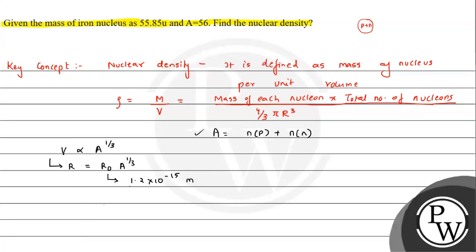We will generalize the formula. Rho can be written as mass of each nucleon. Protons and neutrons collectively are called nucleons. We know mass of protons equals mass of neutrons, and that is 1.67 times 10 raised to minus 27 kg.